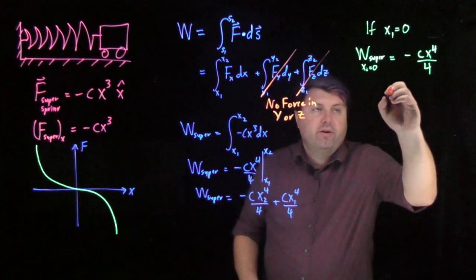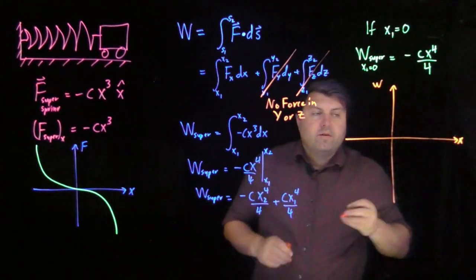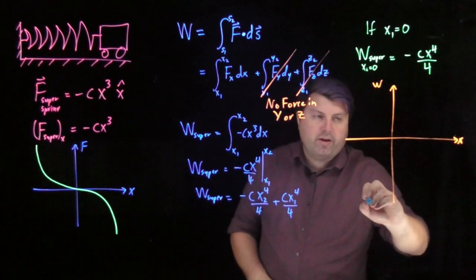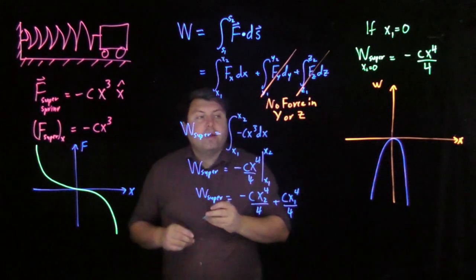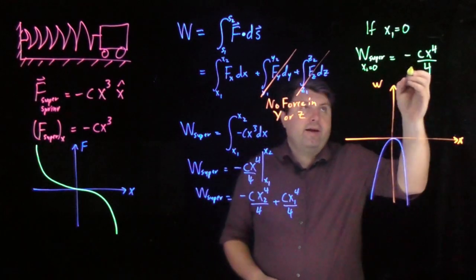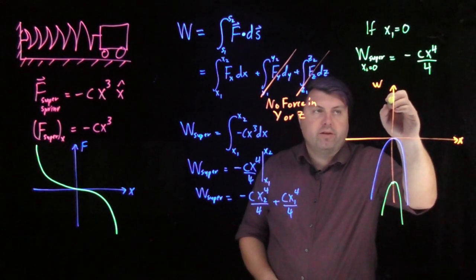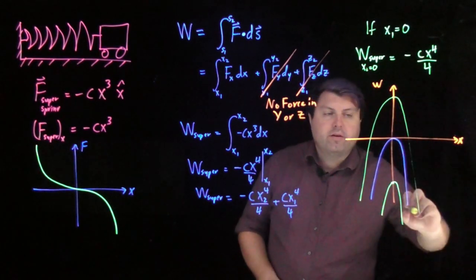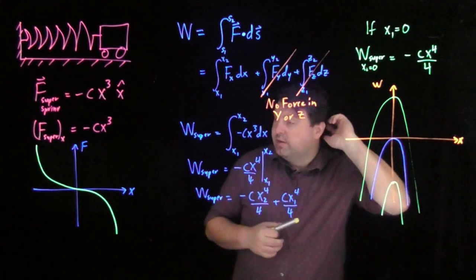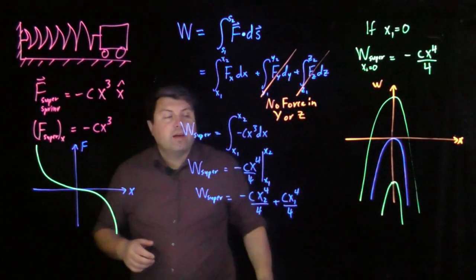So then what this would look like is that our work versus x, if our x initial is zero, then we are going to have a negative x⁴ graph like this. But we could also have x₁ is negative, and so it would look like this, or we could have x₁ is positive, and it would look like this. Just however we want to have this look, depending on what our initial position is, we just change this as we want it.